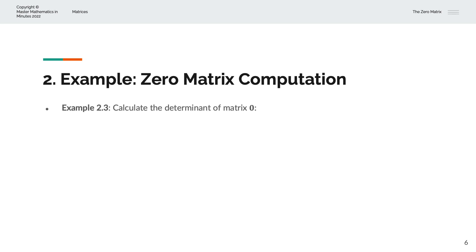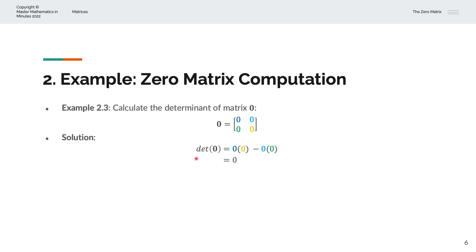In the third example, we calculate the determinant of the zero matrix using AD minus BC. A is 0, D is 0, B is 0, and C is 0. So the determinant is 0 times 0 minus 0 times 0, which simplifies to 0. The determinant of the zero matrix is always 0, and because of that, we're unable to find the inverse of a zero matrix.